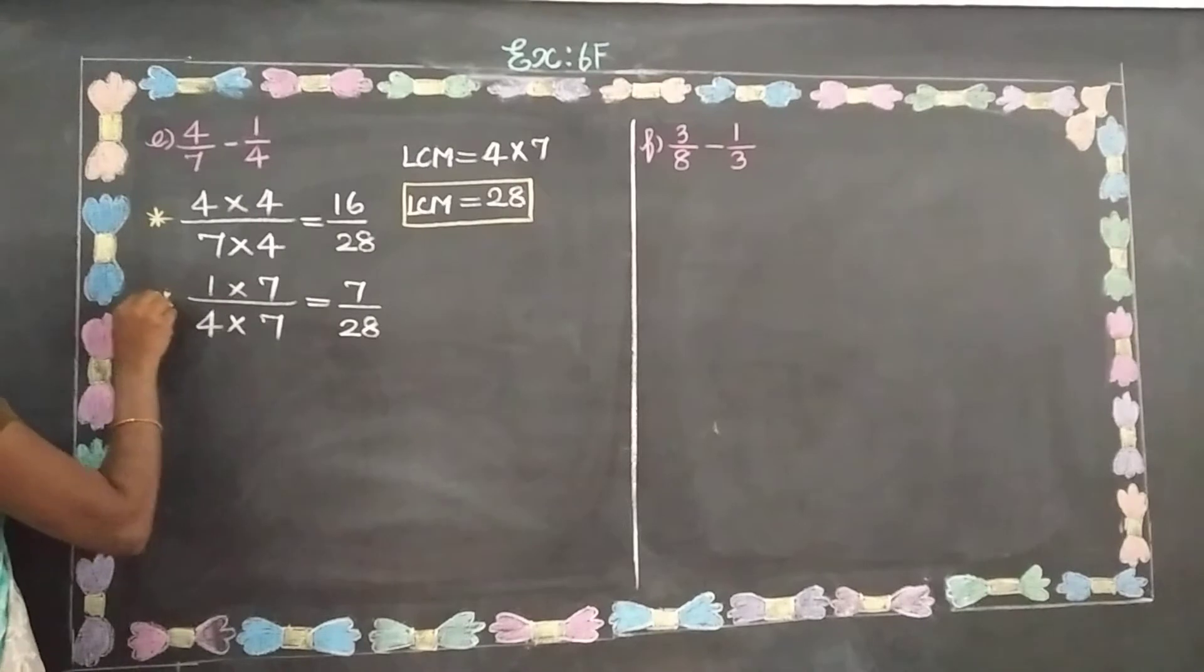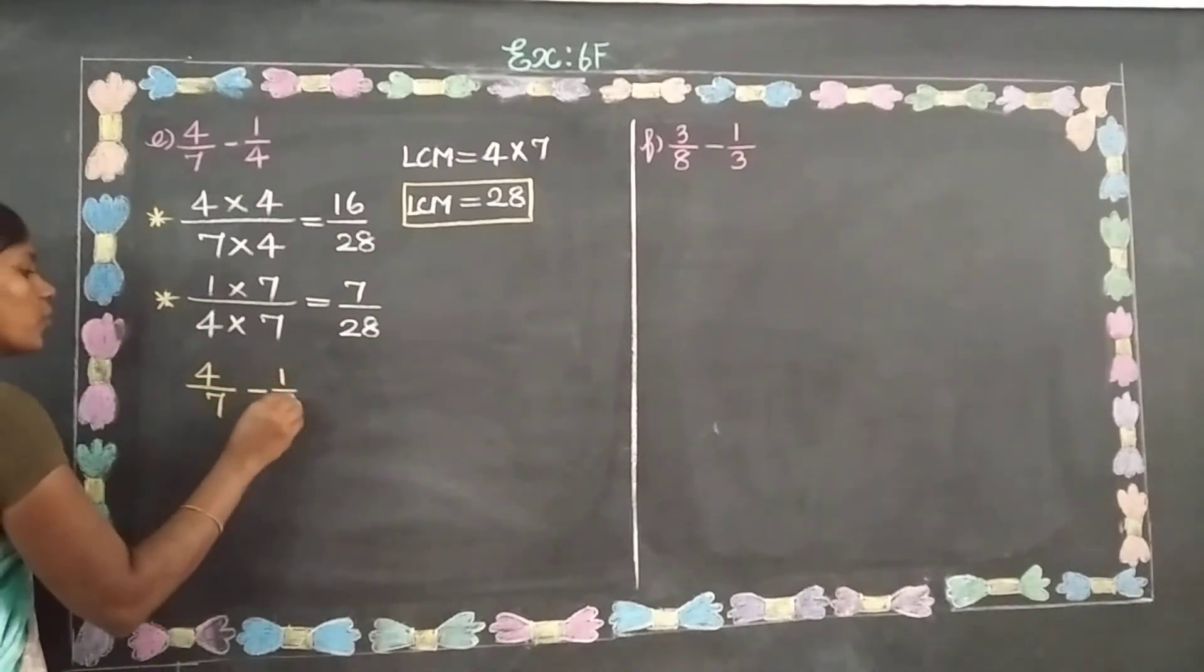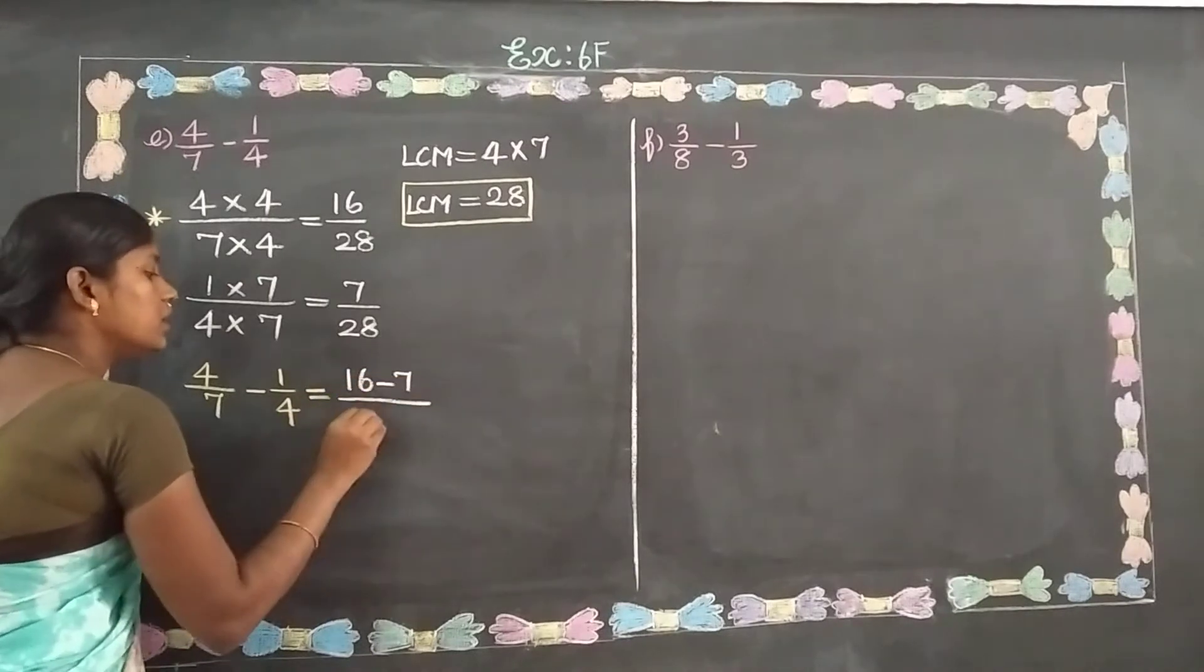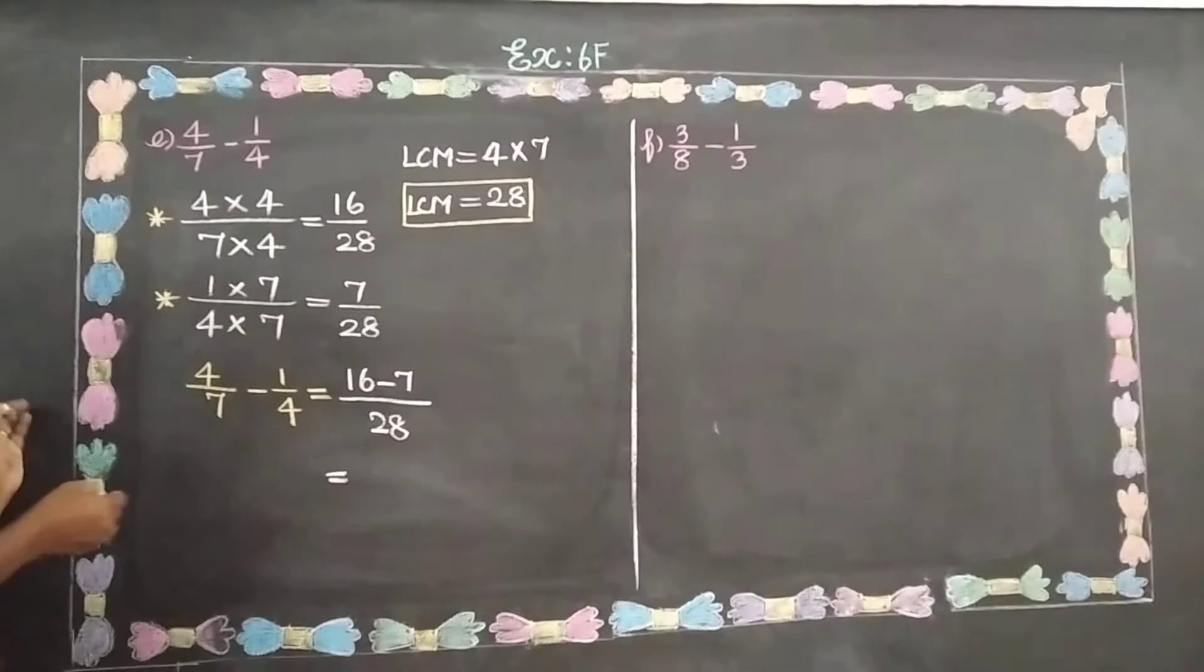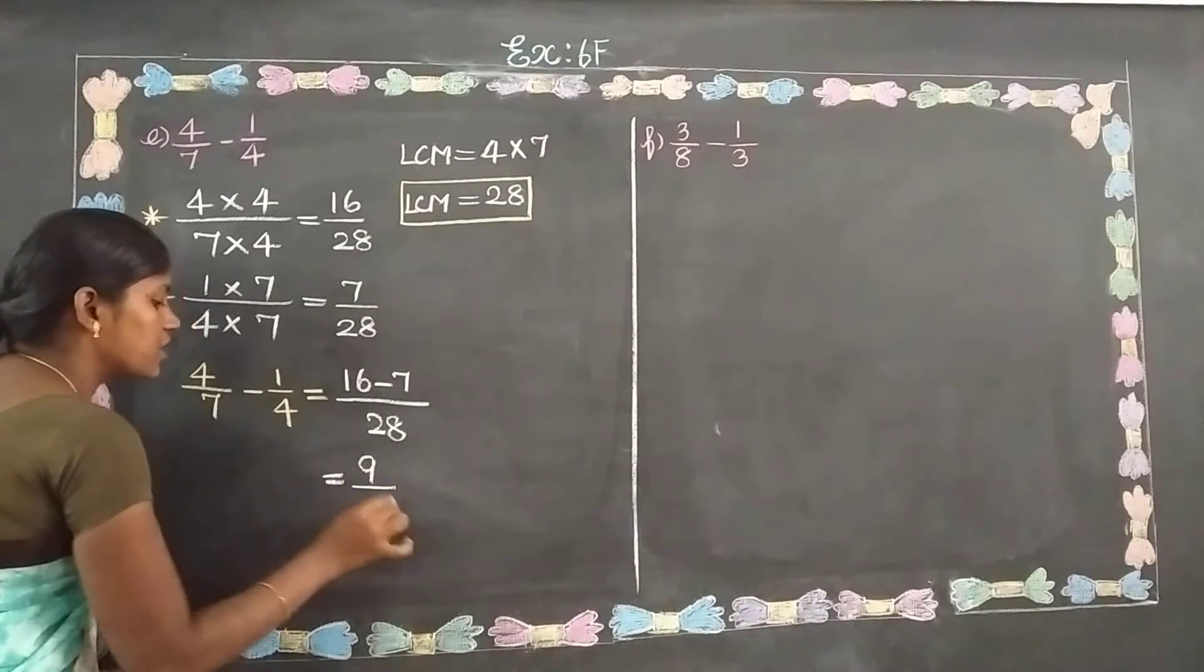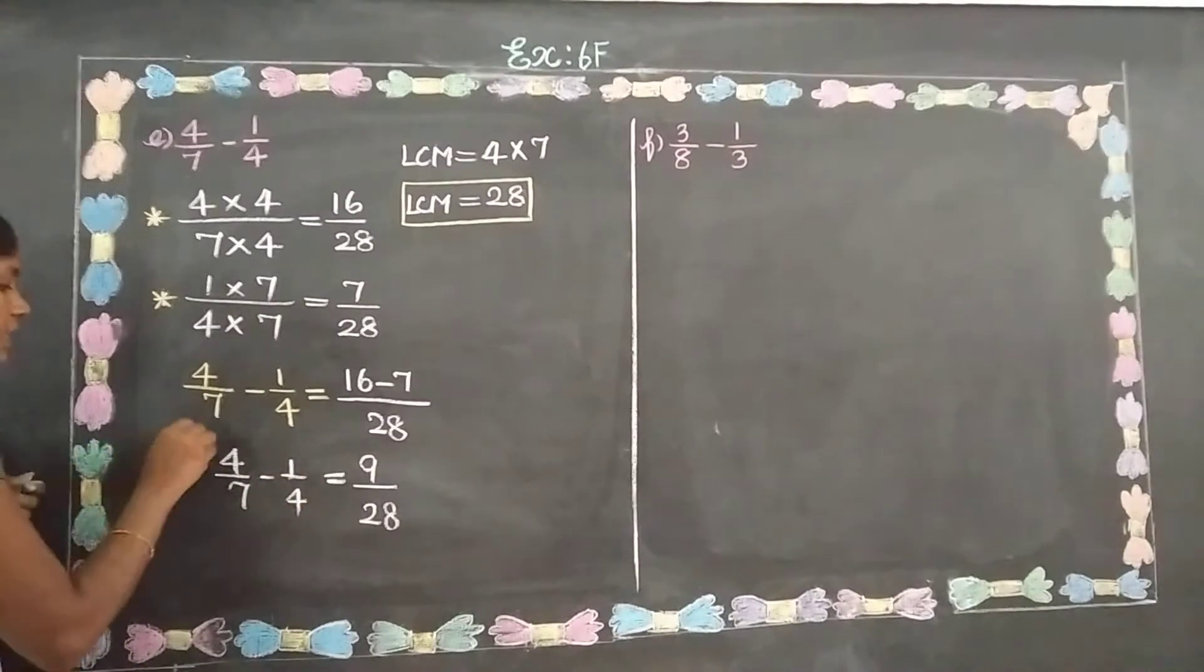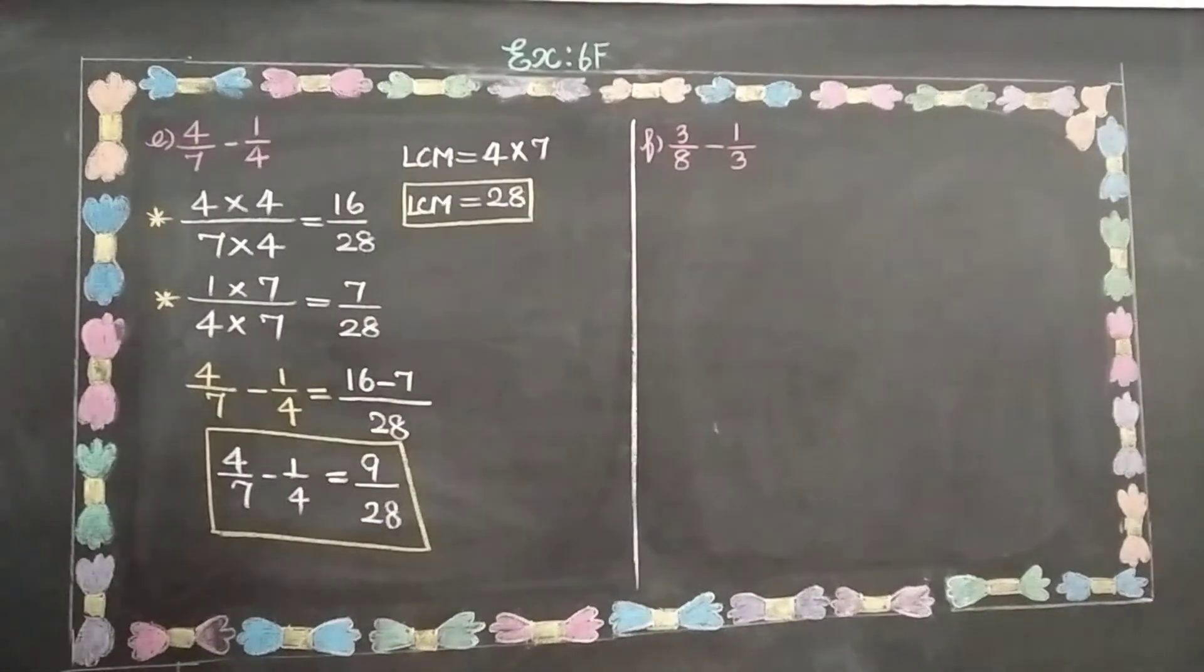Then subtract. 4 by 7 minus 1 by 4 equals 16 minus 7 as subtraction formula. 16 minus 7 by 28, 16 minus 7 is 9. So 9 by 28 is the final answer.